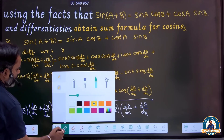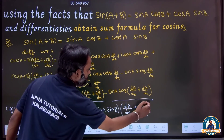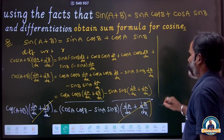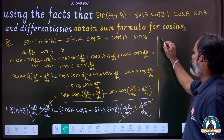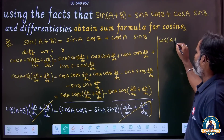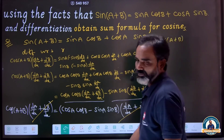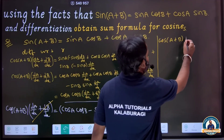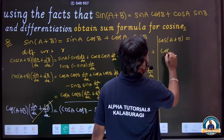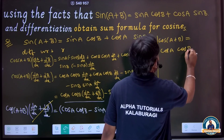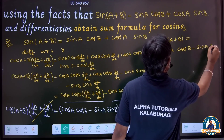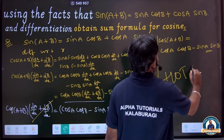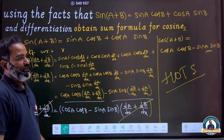Now we cancel. Finally we get: cos(a+b) is equal to cos a cos b minus sin a sin b. So we have successfully used differentiation to find and prove what cos(a+b) equals: cos a cos b minus sin a sin b.